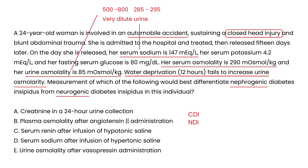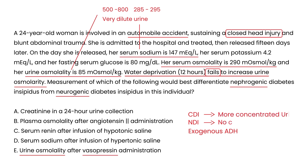To differentiate nephrogenic from neurogenic (central) diabetes insipidus, the next test is giving exogenous ADH — vasopressin — and then measuring urine osmolality. In central diabetes insipidus, there will be a marked increase and the urine will become more concentrated. In nephrogenic diabetes insipidus, there will be no change because the kidney is unresponsive. Therefore, to distinguish between the two, you must give vasopressin and measure urine osmolality.